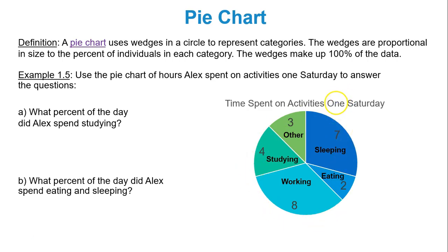Use the pie chart of hours Alex spent on activities one Saturday to answer the questions. What percent of the day did Alex spend studying? We have 24 hours total in my pie chart. That's how many hours are in a day. To do this all I have to do is find the studying hours and divide by the total hours, and then I'll convert to a percentage. How many hours out of 24 did Alex spend studying? It appears that he spent 4. 4 out of 24. Well divide those two numbers using your calculator and you get 0.17. As a percentage you move the decimal to the right two spots or you multiply by 100. That's 17% of Alex's Saturday was spent studying. Yikes.